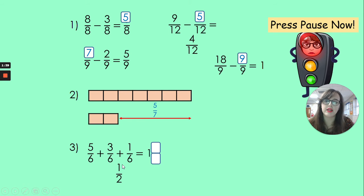And finally, 5 sixths add 3 sixths add 1 sixth equals 1 and what? The answer there is 1 and 3 sixths, which could also be written as 1 and a half.